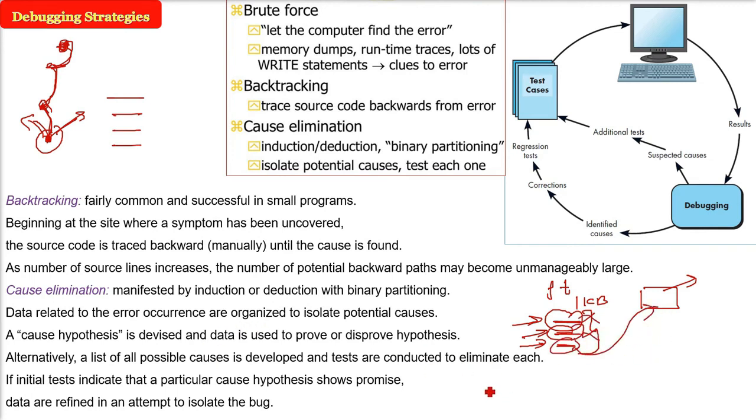Then finally, when we eliminate all others, the final hypothesis we keep. So the possible causes all are kept and one by one they are eliminated. If the initial test indicates that particular hypothesis is showing promise, then the data are defined in attempt to isolate the bug.